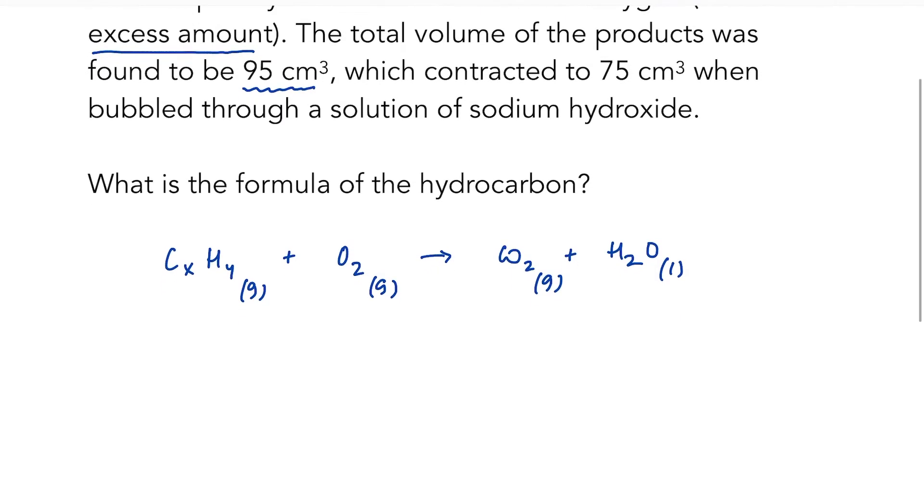We know from the question that we have 10 centimetres cubed of our hydrocarbon. We can also figure out how much carbon dioxide we've got because that was the point of bubbling our product mixture through a solution of sodium hydroxide. The sodium hydroxide removes the carbon dioxide, we can see that the volume of products contracted from 95 centimetres cubed to 75 centimetres cubed. So the volume of carbon dioxide in my products will have been 20 centimetres cubed.